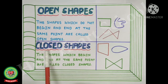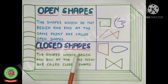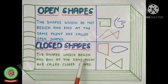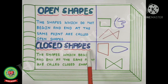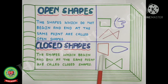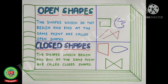Next are closed shapes. The shapes which begin and end at the same point are called closed shapes. These figures have the same beginning point and ending point, so these are examples of closed shapes.